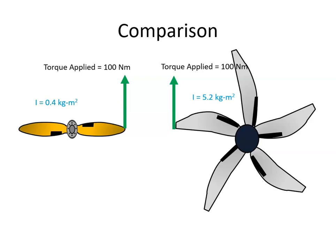Torque is I times alpha, which means alpha equals torque over the moment of inertia. In this case it's 100 Newton meters divided by 0.4 kilogram meter squared, giving 250 radians per second squared for the small propeller, and 100 over 5.2 gives 19.23 radians per second squared for the larger propeller.